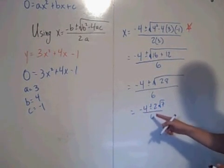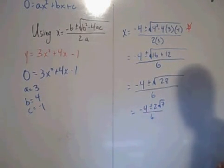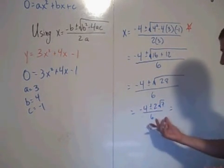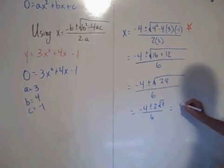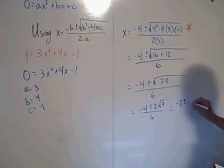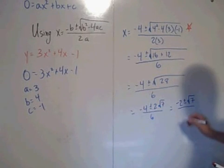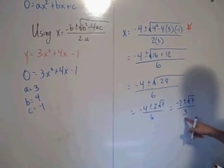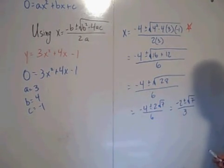And since 4 and 2 and 6 all share a common factor of 2, the simplest case, the simplest way to write your answer here is negative 2 plus or minus the square root of 7 all over 3. I factored out a 2 and canceled there.